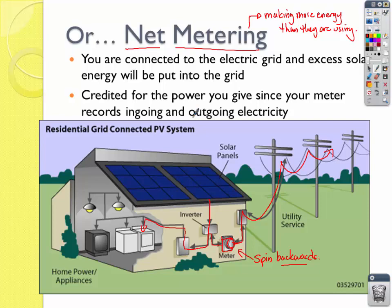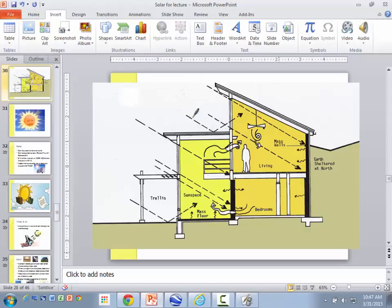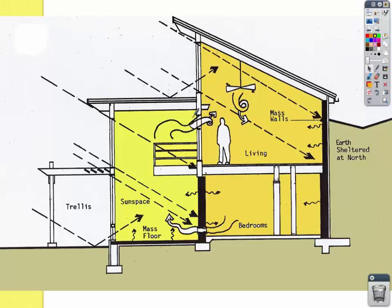Think about net metering as you move out into the world and start building your own homes and buying land. The last thing to talk about here with solar energy are passive systems. So far we've talked about active systems where machinery and mechanisms are used. These are now strategies that use the sun's solar energy to reduce the amount of electricity we need or to provide heat in our homes — passive systems that use no machinery. If you look at this house, there are a lot of passive strategies that are used.